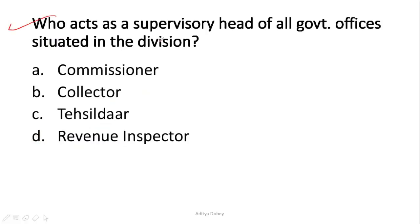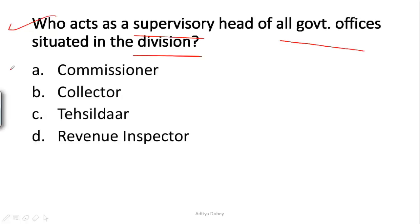The next question is: who acts as the supervisory head of all government offices situated in the division? The answer is Option A — Commissioner. The Divisional Commissioner acts as the supervisory head of all government offices in the division.